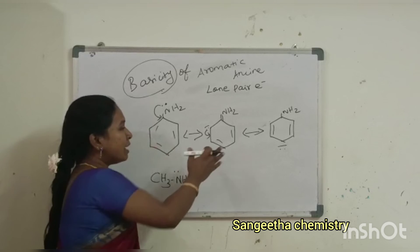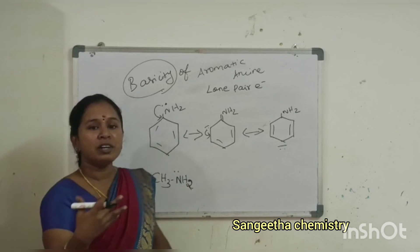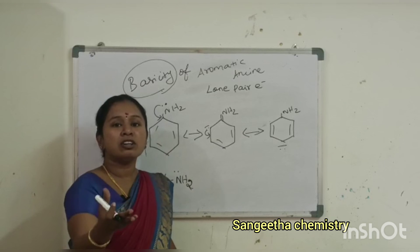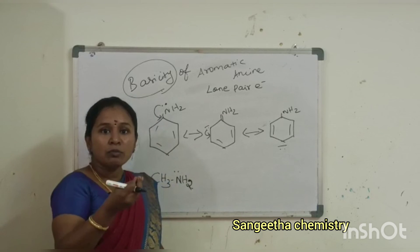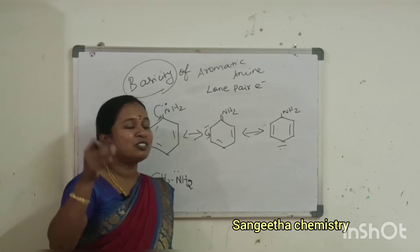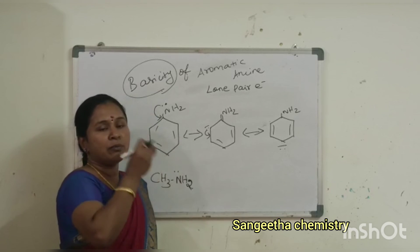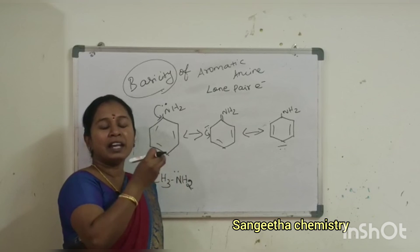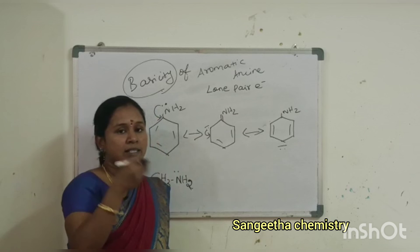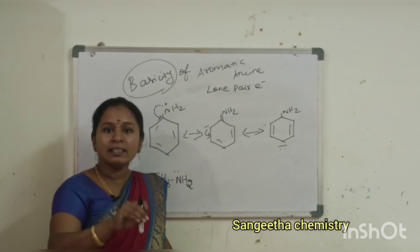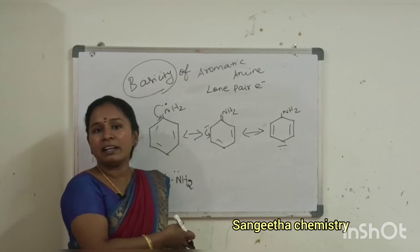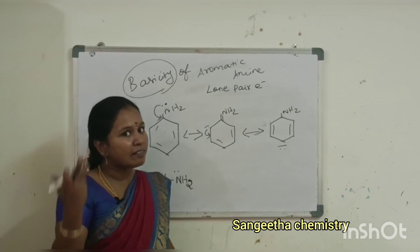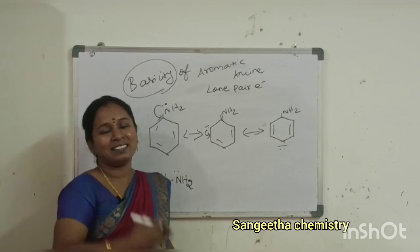Next we are going to discuss about the effect of substituents on aromatic amines — electron withdrawing groups and electron releasing groups — and how they affect the basicity. Aromatic amines are less basic than aliphatic amines because the lone pair of electrons in aromatic amines is engaged in delocalization. In aliphatic amines, there is no resonance, so the lone pair is free and they easily accept a proton — making them more basic.